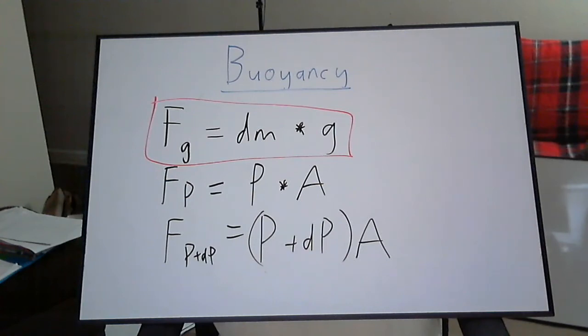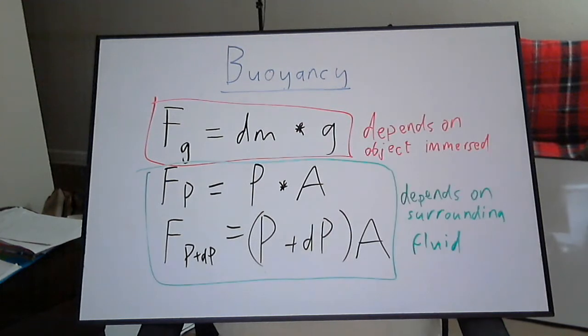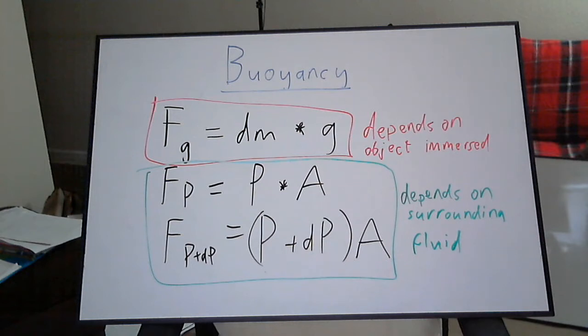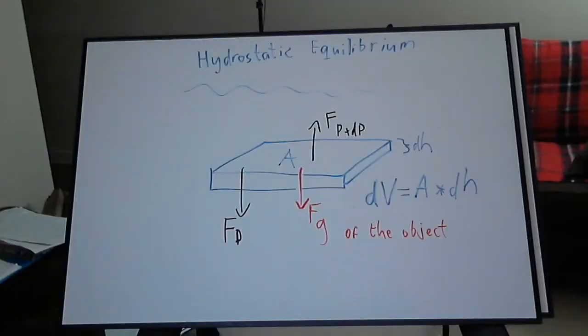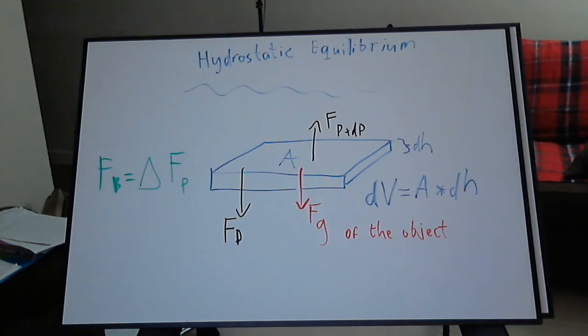But notice that the enclosed object does not have to be a sample volume of the fluid itself. However, the forces due to pressure would remain the same regardless of the object as long as the fluid is the same. This can give us a shortcut for the force due to the pressure differential and it is this force that we refer to as buoyancy.